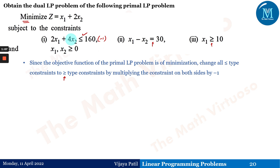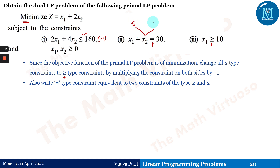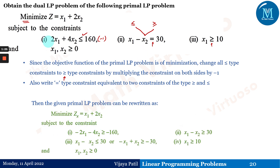Multiplying the first constraint by minus one gives: minus 2x1 minus 4x2 ≥ minus 160. The second constraint is equality, so we form two constraints from it: x1 minus x2 ≥ 30, and x1 minus x2 ≤ 30. Multiplying the second of these by minus one gives minus x1 plus x2 ≥ minus 30. The fourth constraint is already ≥, so it remains as is, followed by non-negativity constraints.